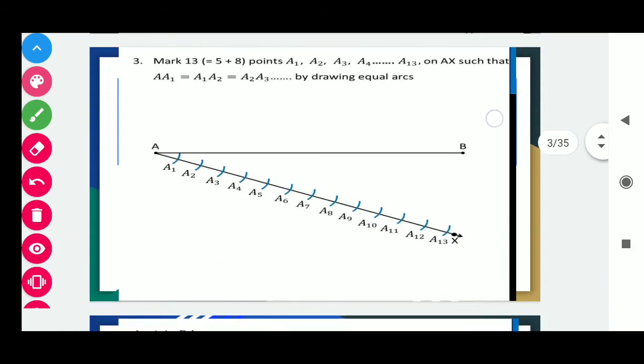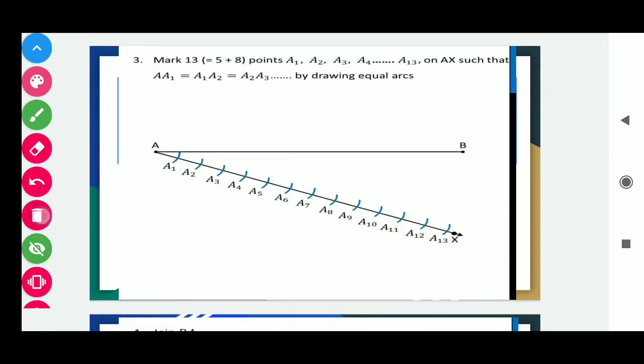Third, mark 13 points A1, A2, A3 up to A13. Students, we have to mark 13 points. Why did we select 13? Because we have to divide AB in the ratio 5 ratio 8, and the sum of 5 and 8 is 13. So in this way we mark the 13 arcs.